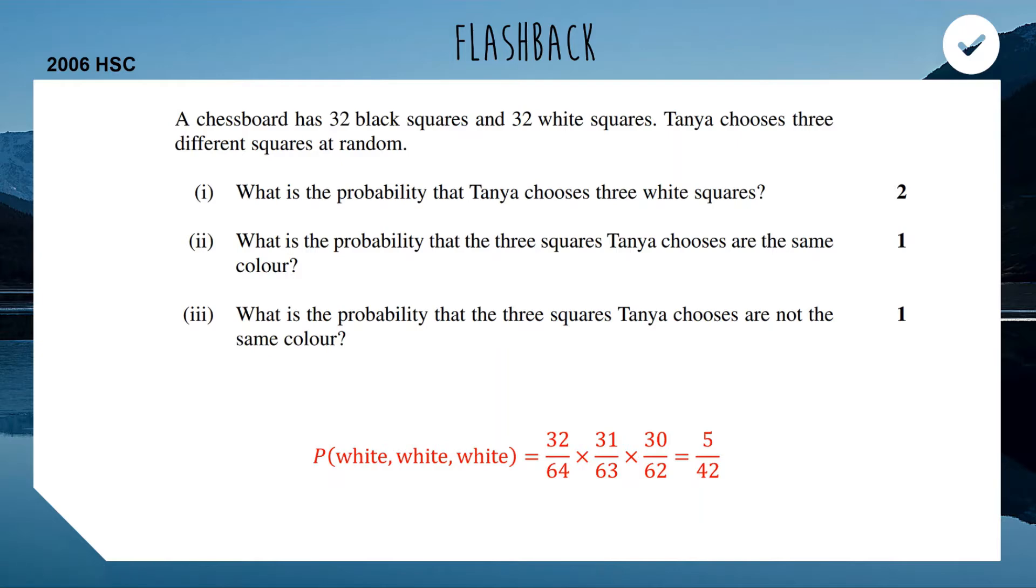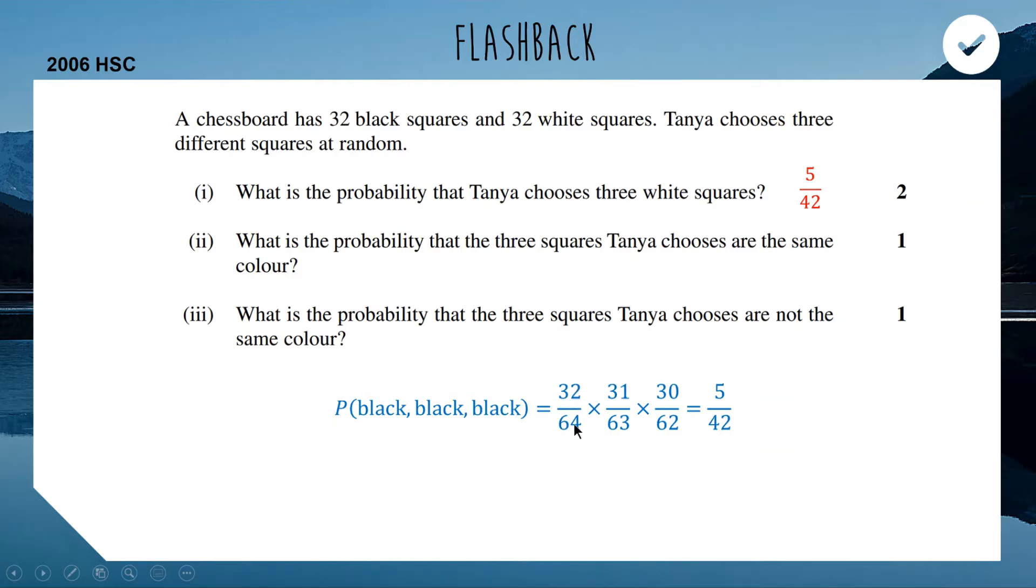The next question asks, what is the probability that the three squares Tanya chooses are the same color? So we just did the probability of white, white, white. We want to also find out the probability that she could have chosen black three times in a row. And then both of those outcomes are going to suit our criteria. Similarly, for finding the probability of three black squares in a row, it's pretty much the same thing, because the first black one has 32 chance out of 64 in total. And then once again, each time you're stepping down. So it's the same probability as getting three white ones in a row, because there's the same number of black and white squares.